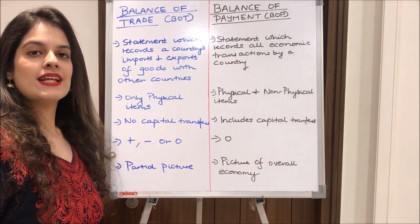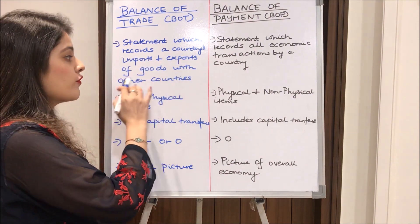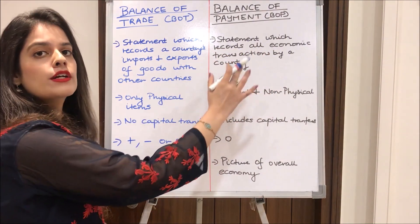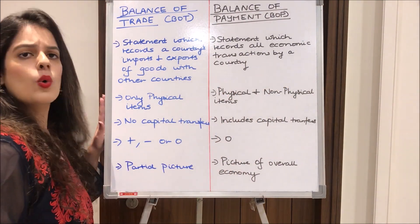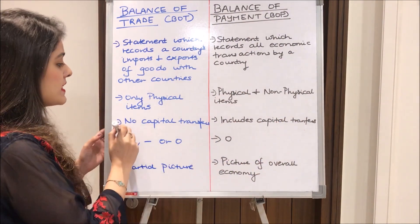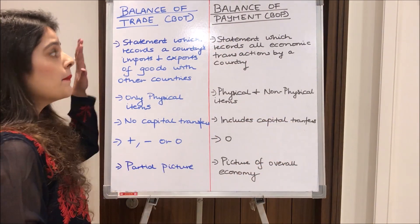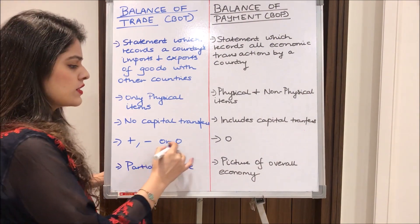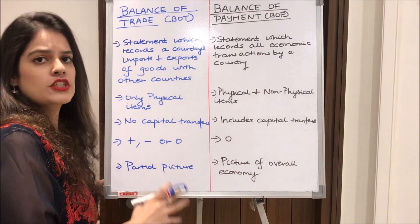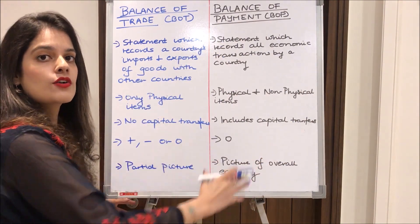Coming next to balance of trade and balance of payment. BOT is a statement which records a country's imports and exports of goods with other countries over a period of time, whereas BOP is a statement which records all economic transactions by a country. BOT includes only physical items, whereas BOP includes physical and non-physical items like services. BOT has no capital transfers, but BOP includes capital transfers between countries. BOT can be positive, negative, or zero, whereas BOP is always zero — that is, always balanced. BOT gives a partial picture of the economy, whereas BOP gives an overall picture. BOT is essentially a part of balance of payments.